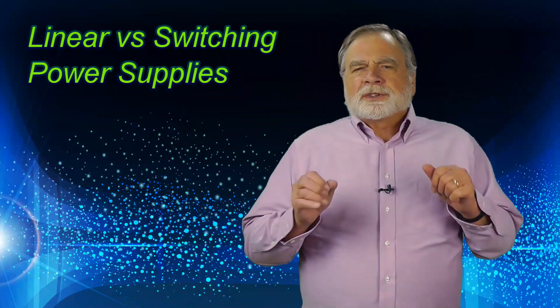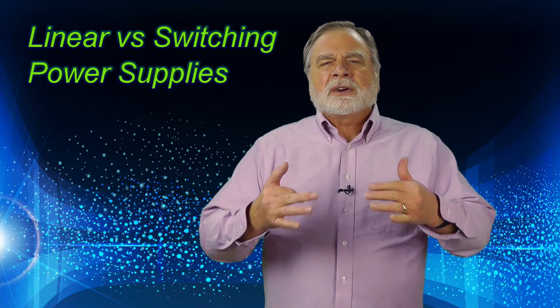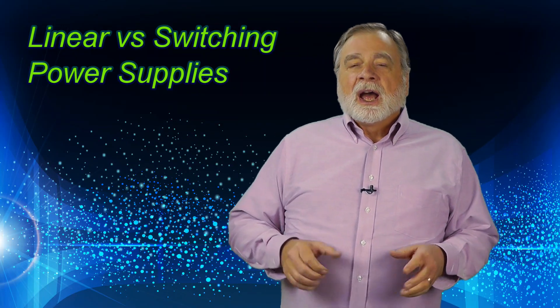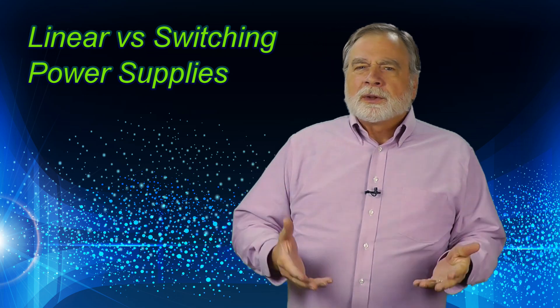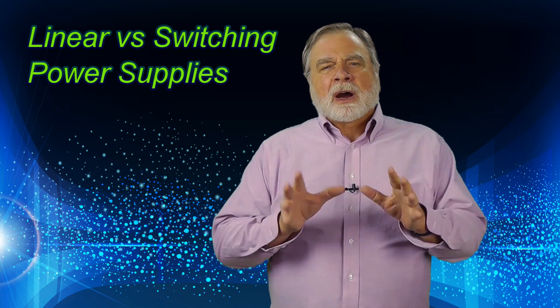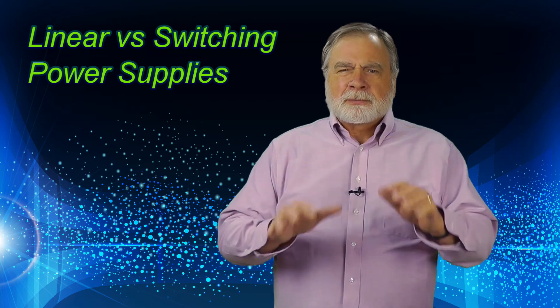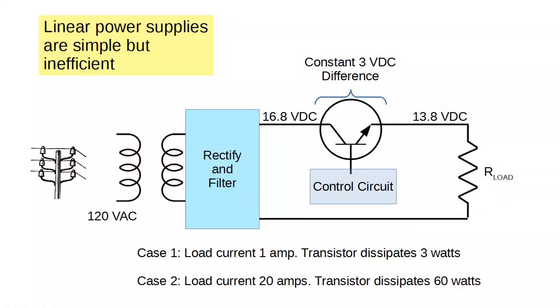Jason wanted to know the difference between linear and switching power supplies. Let's look at each in turn. Both are available on the market, but the switching power supply is rapidly supplanting the linear. A linear power supply is so-called because it is analog and uses what's called a pass transistor in the middle of its linear range. Here's a conceptual example.